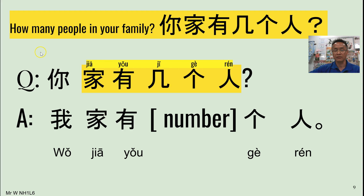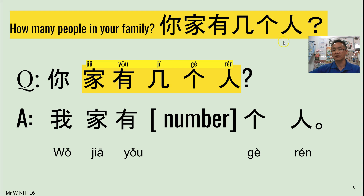I'll put the pinyin here for you just to help initially. We know that 幾 is the question word for numbers. We've had before 你幾歲 for 'how old are you?' And we've talked about 個, the measure word for people in Chinese — 幾個人, how many people? We also talked about 有 in our last video for 'to have', and 家 meaning 'family'. 你家有幾個人? So, how many people in your family?